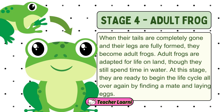Stage 4 – The Adult Frog. When their tails are completely gone and their legs are fully formed, they become adult frogs. Adult frogs are adapted for life on land, though they still spend time in water. At this stage, they are ready to begin the life cycle all over again by finding a mate and laying eggs.